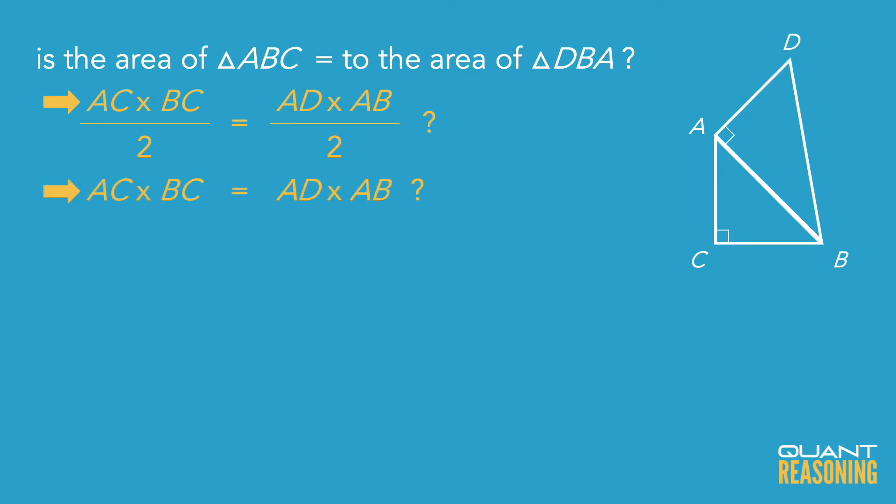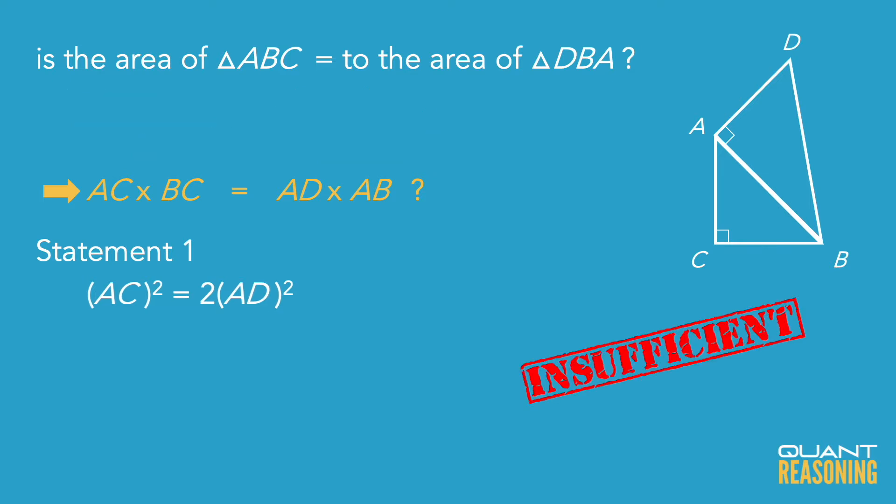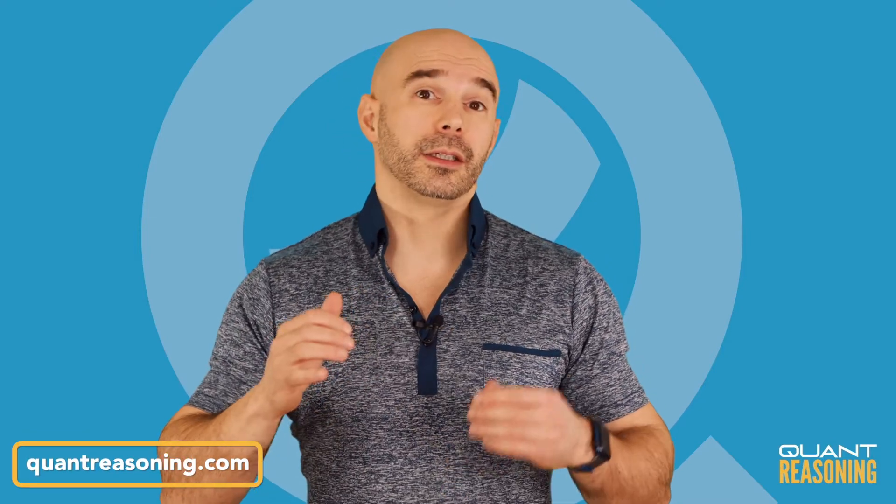Now statement 1 gives us the ratio of AC to AD, but with just that, I'm missing a lot of information, right? I don't know anything about the length of BC, I don't know anything about the length of AB, and so this is not sufficient on its own. Let's go ahead and eliminate the answer choices that claim that statement 1 is sufficient on its own. So A and D are gone, and we're down to BC or E.